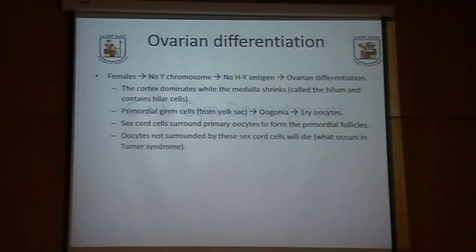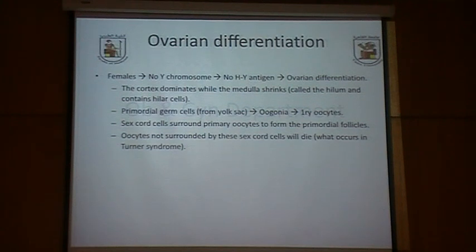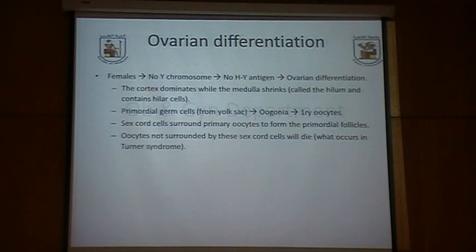In females, ovarian differentiation is different. There is no Y chromosome and therefore no HY antigen, resulting by default in ovarian differentiation. The cortex dominates while the medulla shrinks, called the hilum, and contains hilum cells. The primordial germ cells from the yolk sac form oogonia, which are the primary oocytes. The sex cord cells surround the primary oocytes to form the primordial follicles. In certain conditions such as Turner's syndrome, the oocytes are not surrounded by sex cord cells and they undergo premature atresia, resulting in primary amenorrhea.